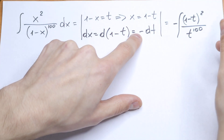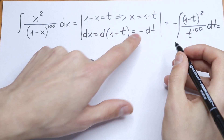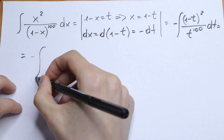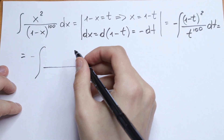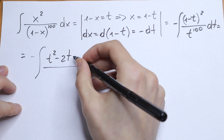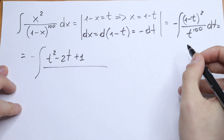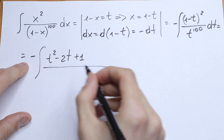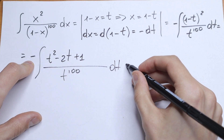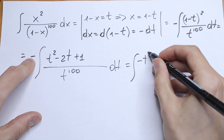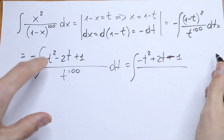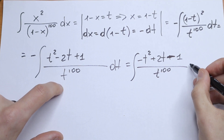I bring the minus in front of the integral. So we have minus integral of (1 minus t) squared over t to the power 100 dt. Let's raise 1 minus t to the second power: we get t squared minus 2t plus 1. And if we multiply this numerator by minus 1, we get minus t squared plus 2t minus 1 over t to the power 100 dt.